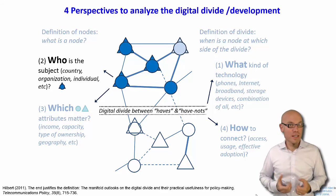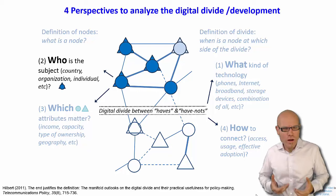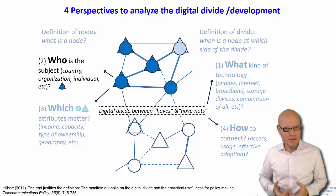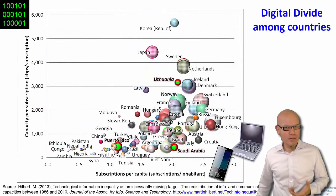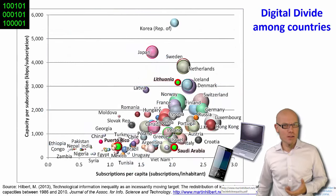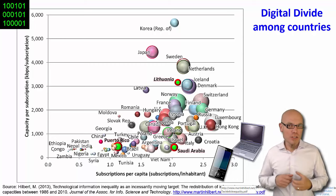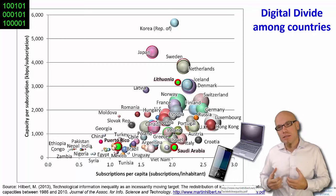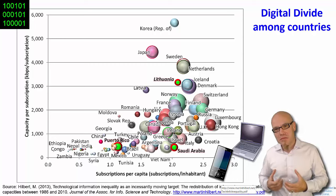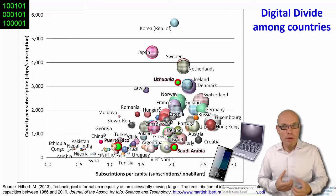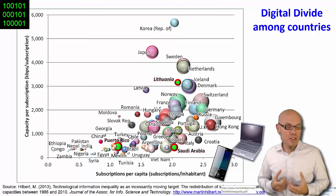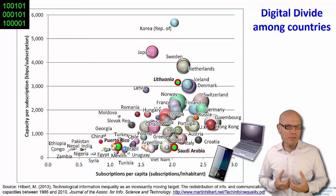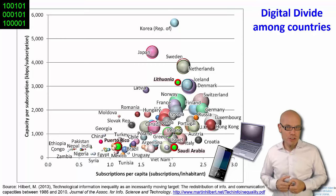Another question we have to answer when we study the digital divide is who are we actually studying? What is the subject of connectivity? In this graph, for example, we were talking about countries — each bubble is a country, some are more connected in terms of devices or bandwidth, and there is a divide between them. This shows different locations on the map: a digital divide among countries, from the perspective of the international digital divide.